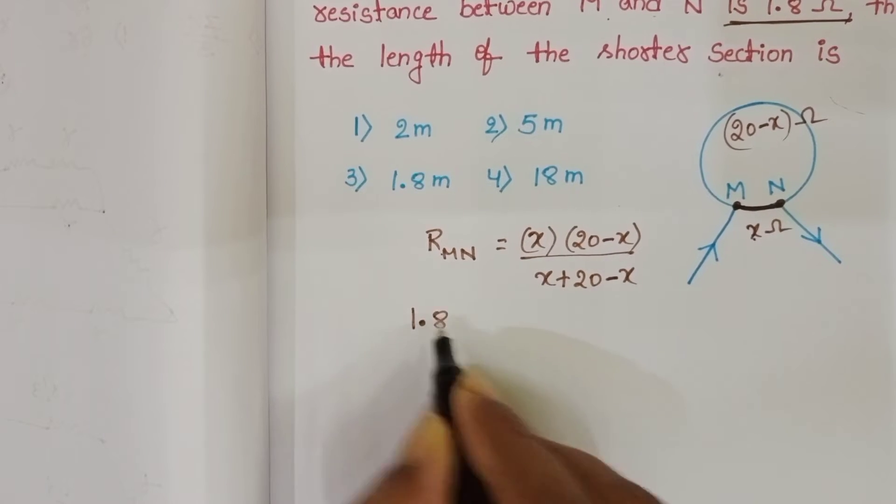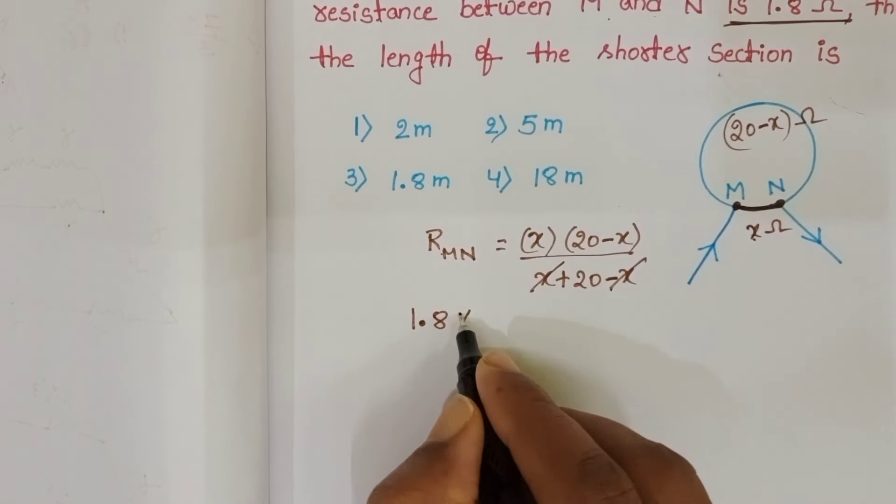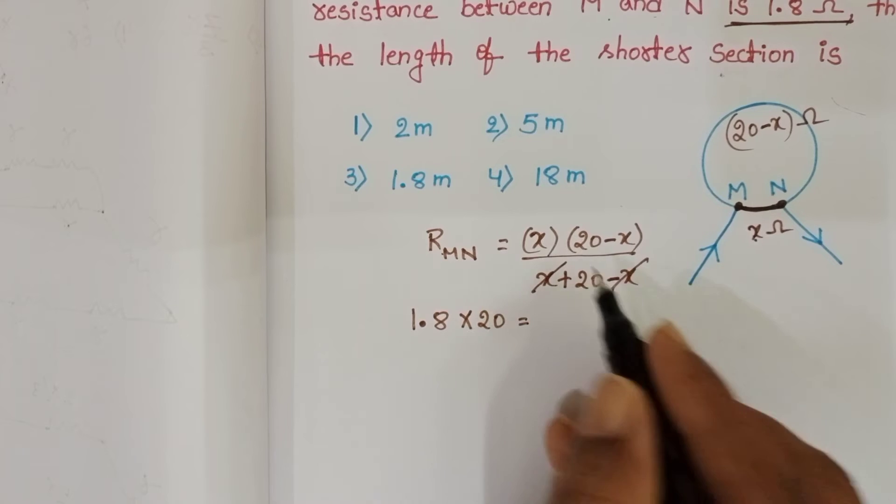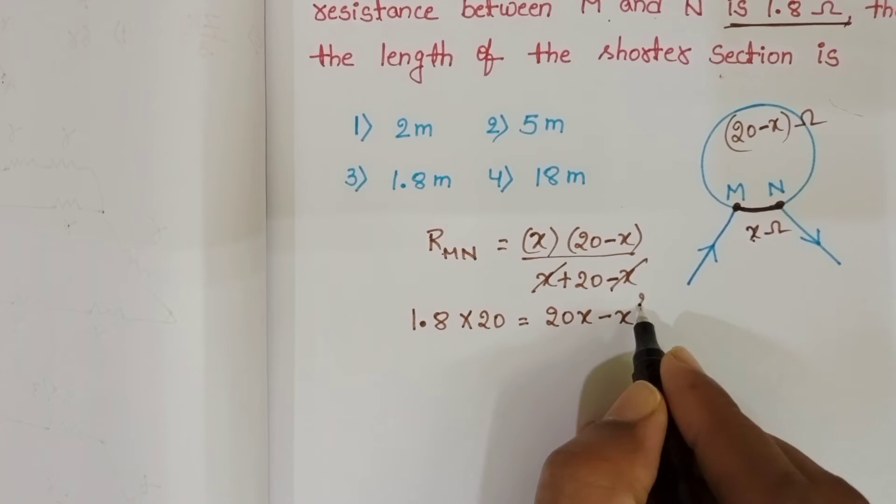So 1.8, here X minus X get cancelled, times 20 equals 20X minus X squared.